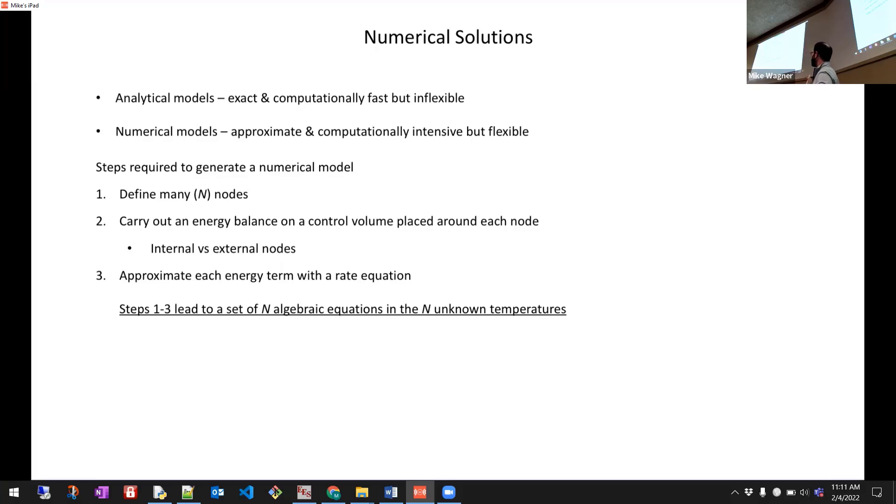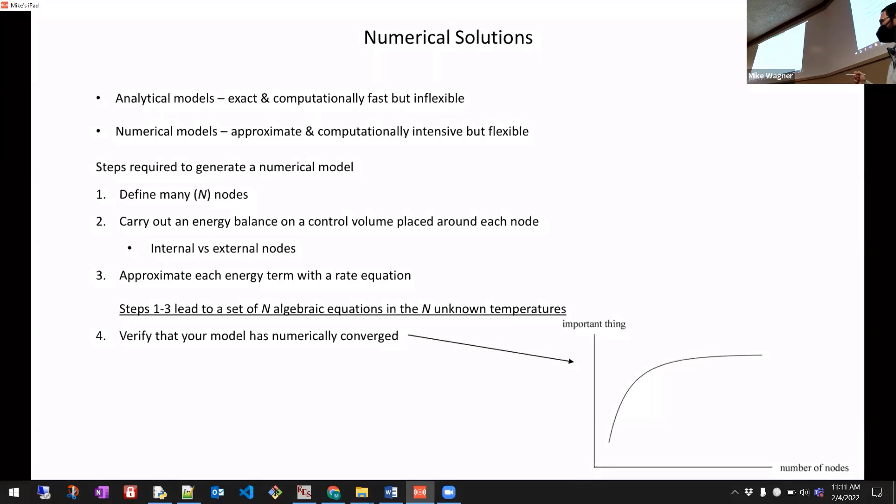So it'd be really nice. We go through step one, two, three. We do it. We come up with a solution. It'd be nice to say we're done, but really we're not. There's more to do after this. What do I mean? Well, you got to somehow verify that the way you set up the model, the answer you're getting doesn't depend on the number of nodes that you chose, or some other assumption that's gone into the model.